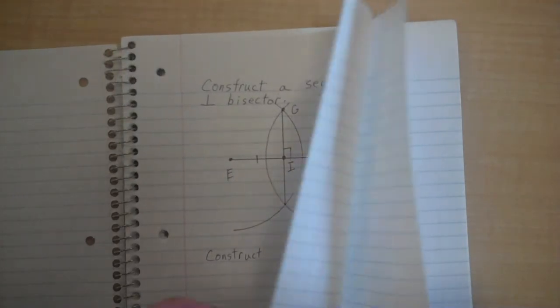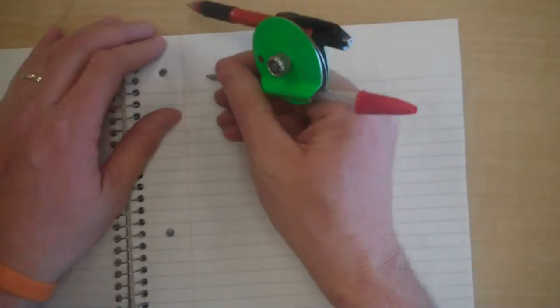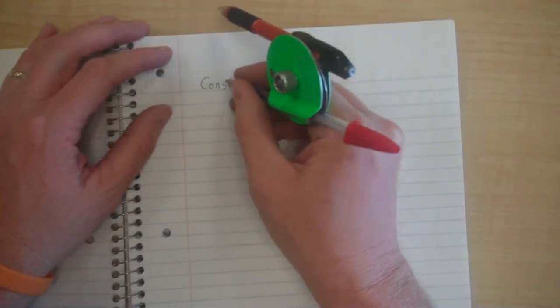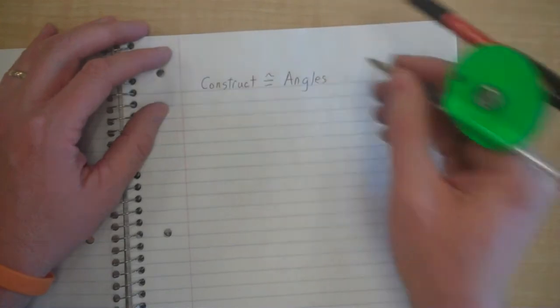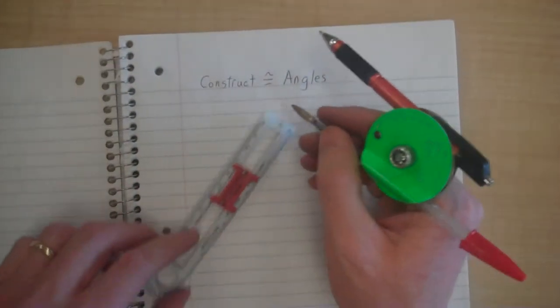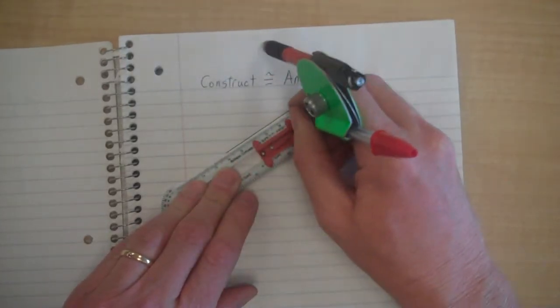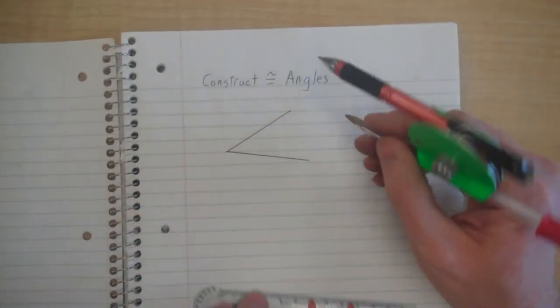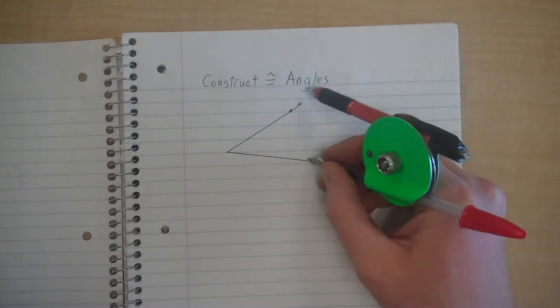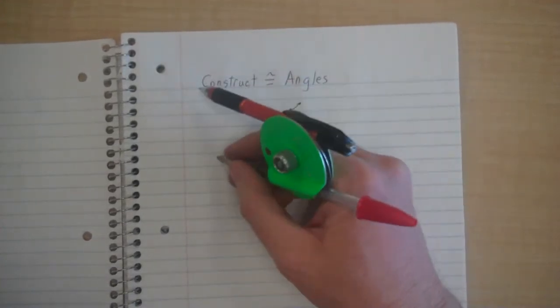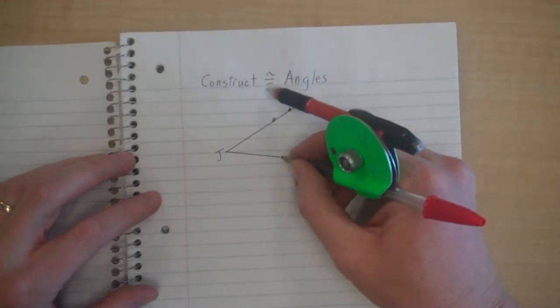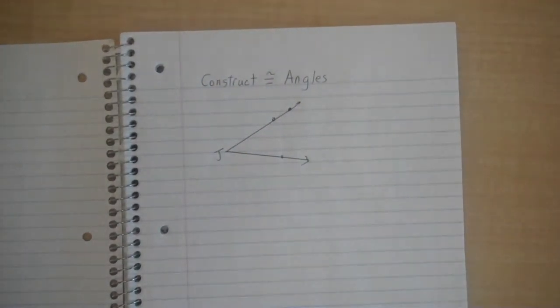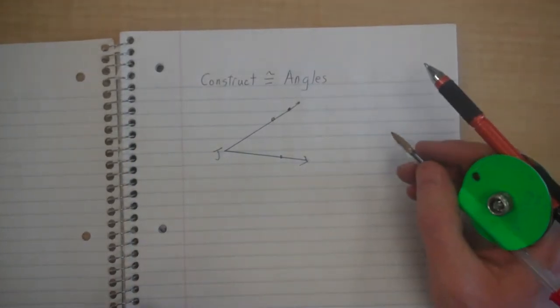The next thing I want to do is construct congruent angles. Let's make an angle. I'm going to call this angle J. I may also put a point here and a point here. I'll worry about those points later. Now I want to construct an angle that is congruent to angle J. The first thing I want to do is draw one side of my congruent angle. I'll put this as angle K.